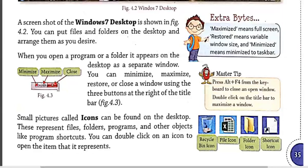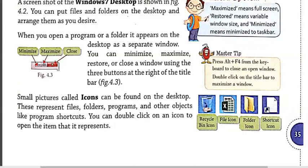Now let's move to the next topic: Icons. Small graphic symbols displayed on the desktop are called icons. Windows uses many objects that have specific functions such as files, programs, computer, folder, network, neighborhood, network shortcut, and recycle bin. Icons play a very important role in the graphical user interface. To open a desired icon, we simply double click on it and that icon will open.